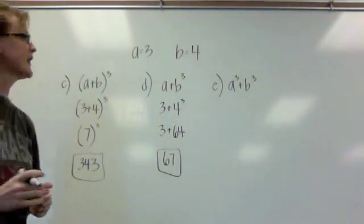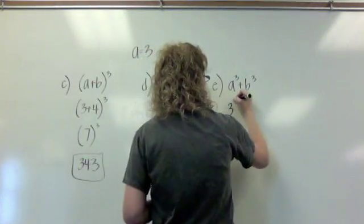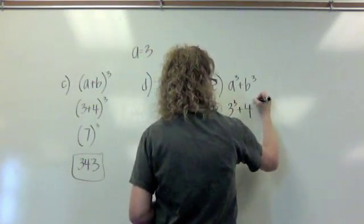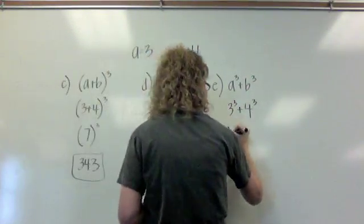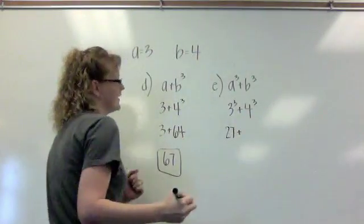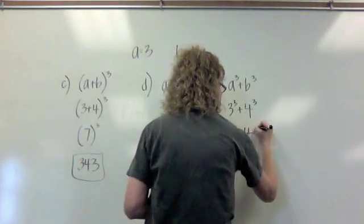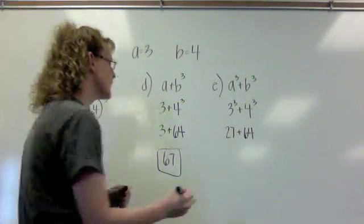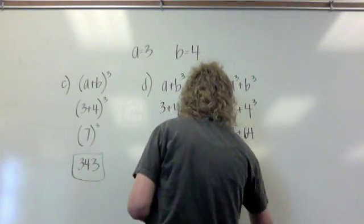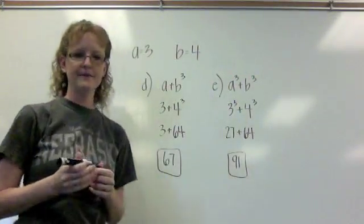In the final example, example E, we have 3 to the third plus 4 to the third. 3 to the third is 3 times 3 times 3, or 27. We just evaluated 4 to the third, which is 64. Finally taking 27 plus 64, we should get 91.